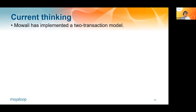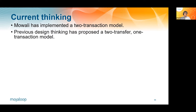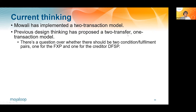So let's talk a bit about the proposed architecture. Currently, we have a two-transfer model of currency conversion — we were thinking about a two-transfer one-transaction model, but Mojaloop currently has a two-transaction model. There's one transaction that goes from the payer DFSP to the foreign exchange provider in the source currency, and a separate transaction from the foreign exchange provider to the payee DFSP in the target currency. We wanted at least a single transaction with two transfers so that we could report on currency conversion transfers by transaction ID and get both legs in the same report.